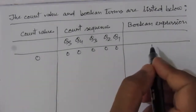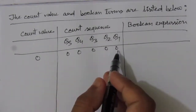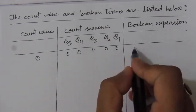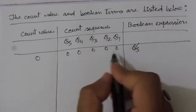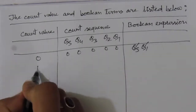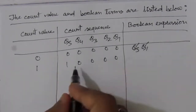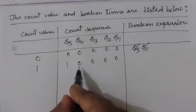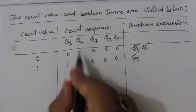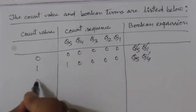The table columns are count sequence (Q5 Q4 Q3 Q2 Q1) and boolean expression. For count 0: the sequence is 00000. To find the boolean expression, look at the first and last bit — both are 0 — so the expression is Q5̄ · Q1̄. For count 1: the sequence is 10000, so look at Q5=1 and Q4=0, giving Q5 · Q4̄.